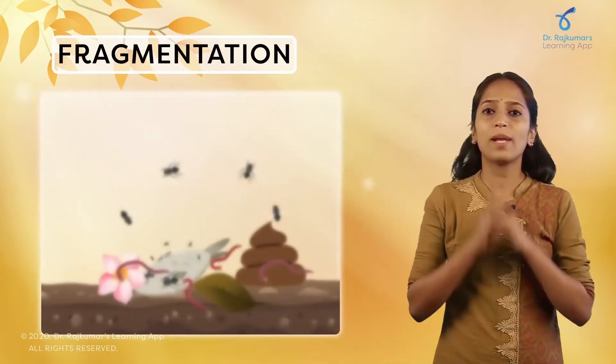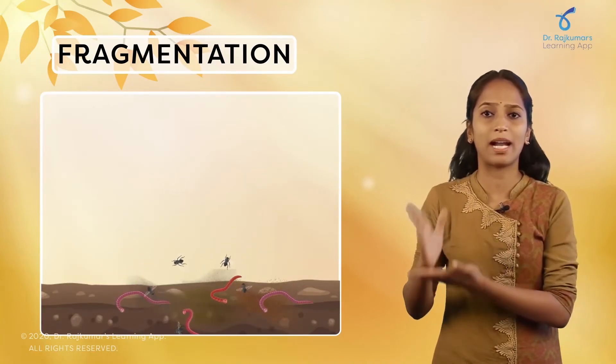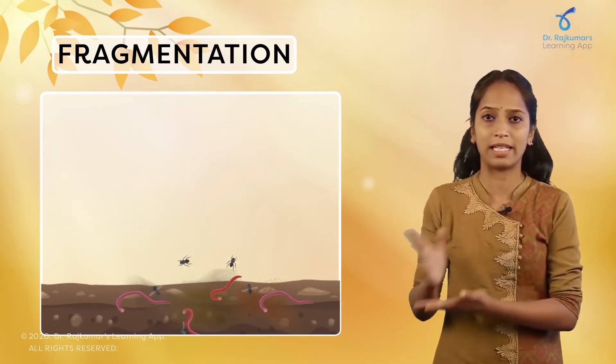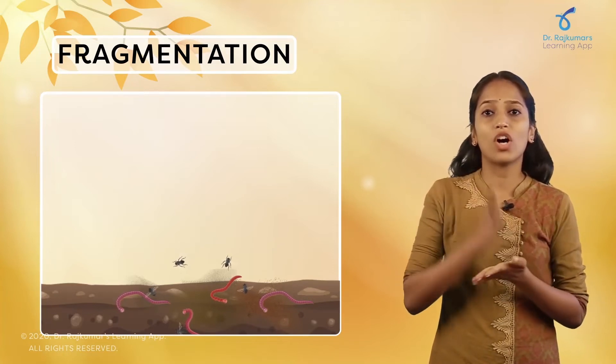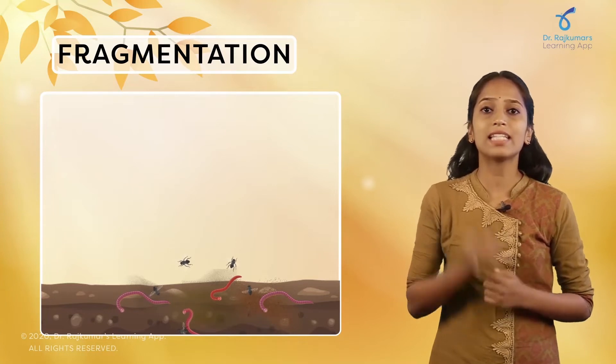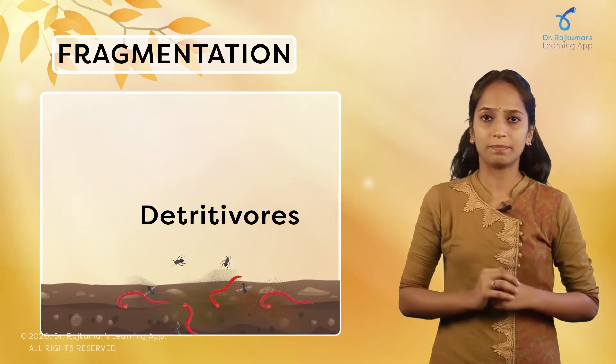There are different steps followed in decomposition. The first one is fragmentation. What happens in fragmentation is that the complex organic matter is broken down into simpler, smaller particles. The organism that helps to break down the organic matter is called a detrivore — an example being the earthworm.